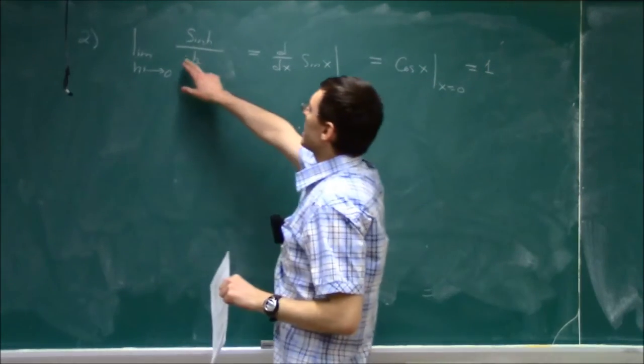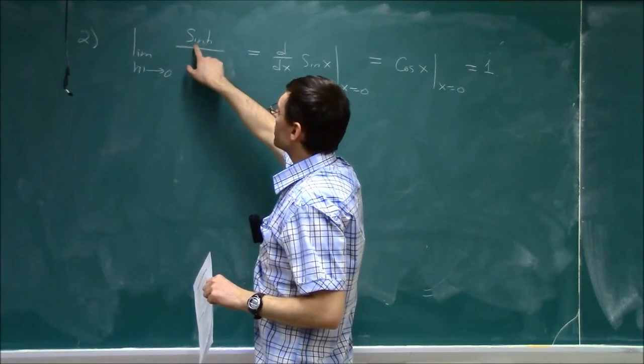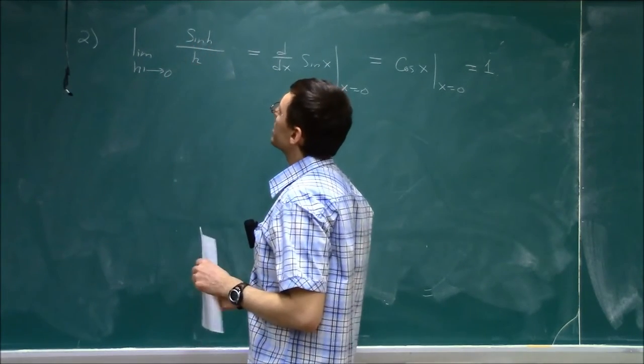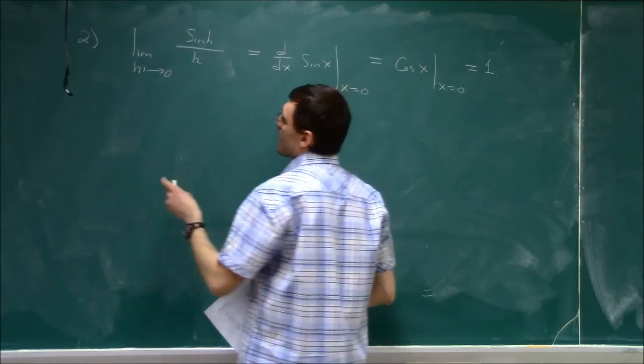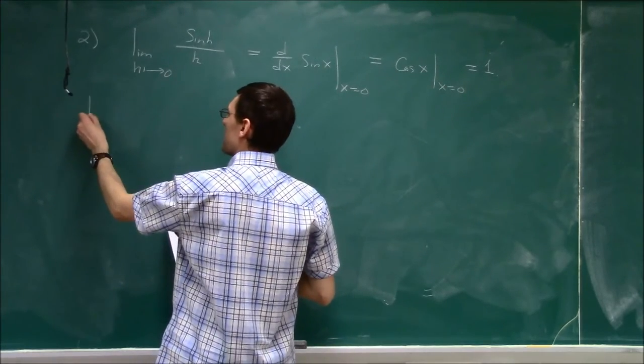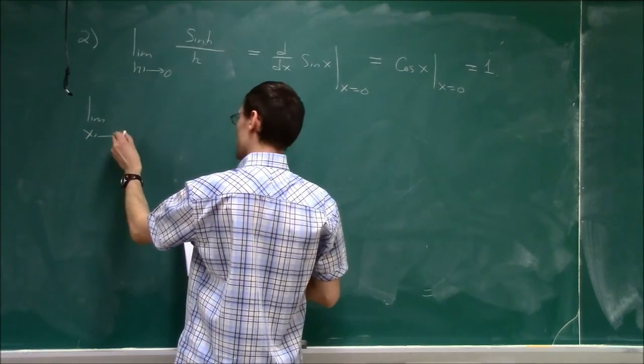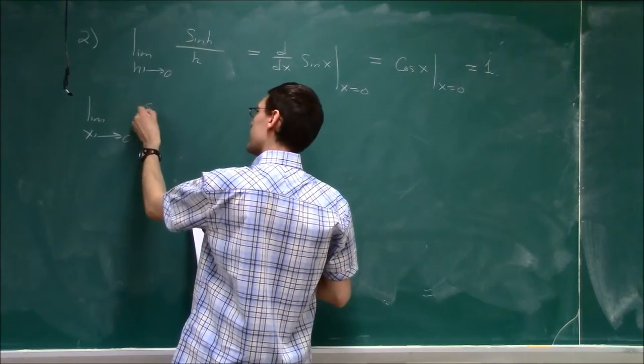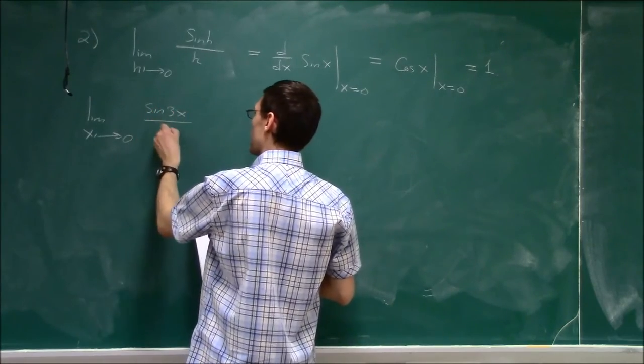That means that if h is very small, sin(h) over h is going to be 1. That means that sin(h) is essentially the same as h. So let's consider this example. What happens if I now take limit as x goes to 0 of sin(3x) over x?